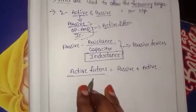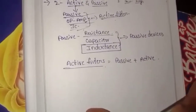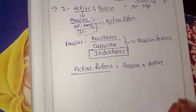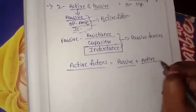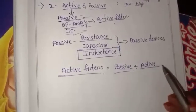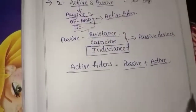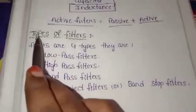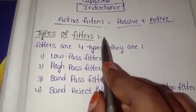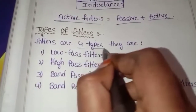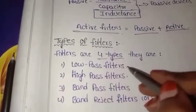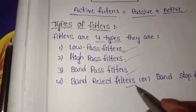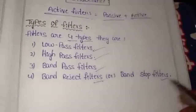Active filters give the correct value. Passive filters also give a correct value result, but we prefer to use active filters. Next, what are the types of filters? Types of filters: low pass filter, high pass filter, band pass filter, band reject filter, and band stop filter.